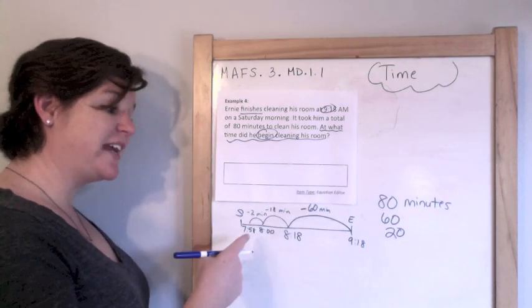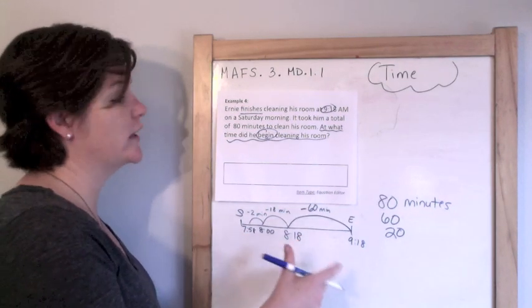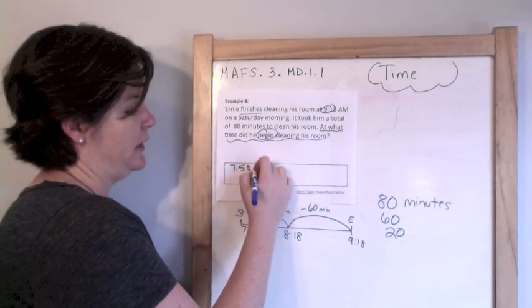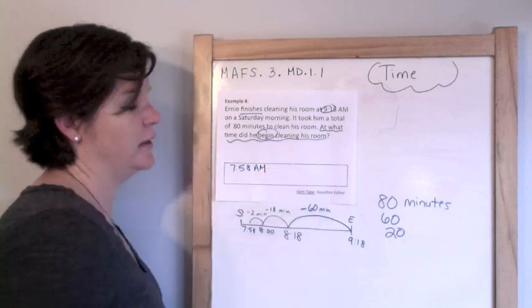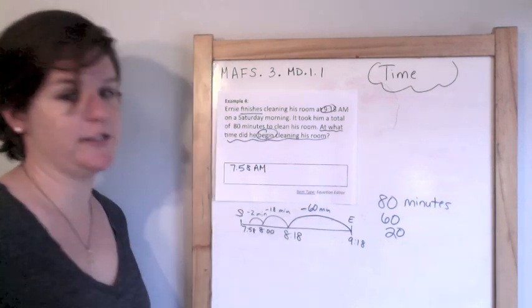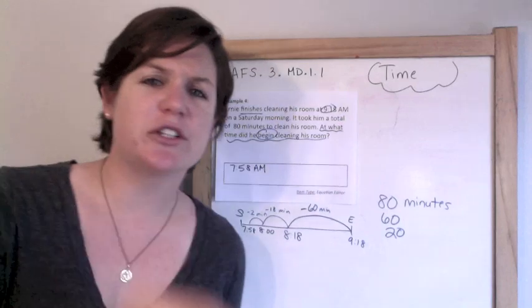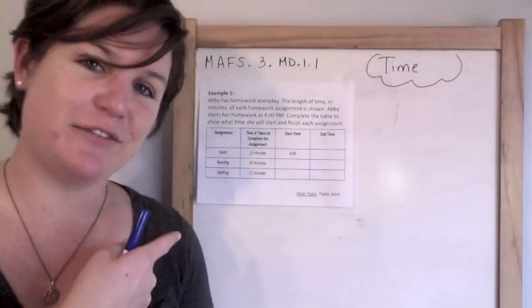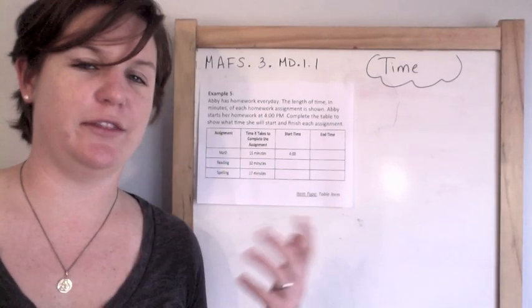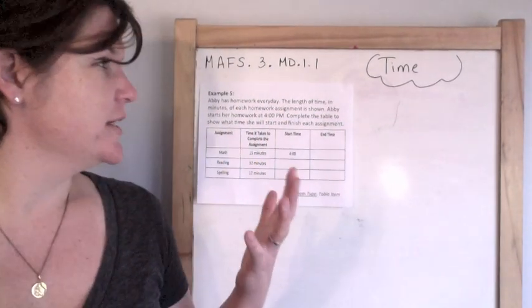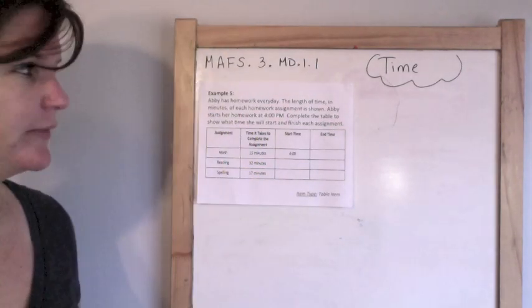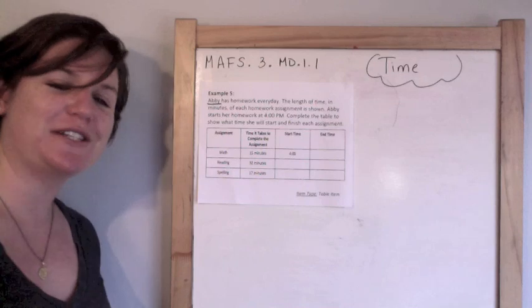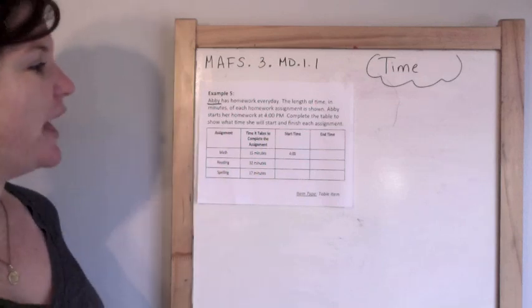Equation editor — so only my answer goes in the box, not all this work I've done. 7:58 a.m. Good job Ernie, cleaning your room and being responsible. You guys should clean your room too. This is my favorite type of time problem that I've noticed on the FSA item specs. So let me go ahead and teach you how to do this one. Abby — like Abby Cadabby from Sesame Street. I was on a Sesame Street kick when I was making this.